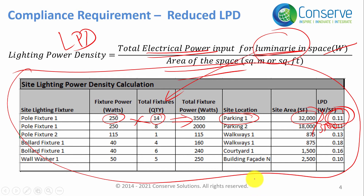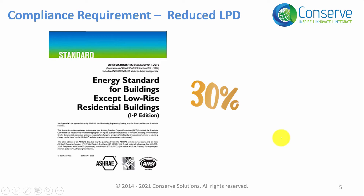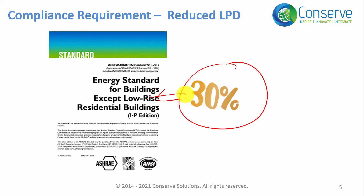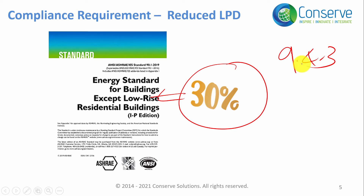To reduce light pollution, the Lighting Power Density should be minimized. The compliance requirement for this credit is that the LPD must be 30% less than the value prescribed by ASHRAE 90.1-2010. Specifically, ASHRAE 90.1-2010 Table 9.4.3 gives the lighting power allowance for exterior spaces, and the project LPD must be 30% below that standard value.